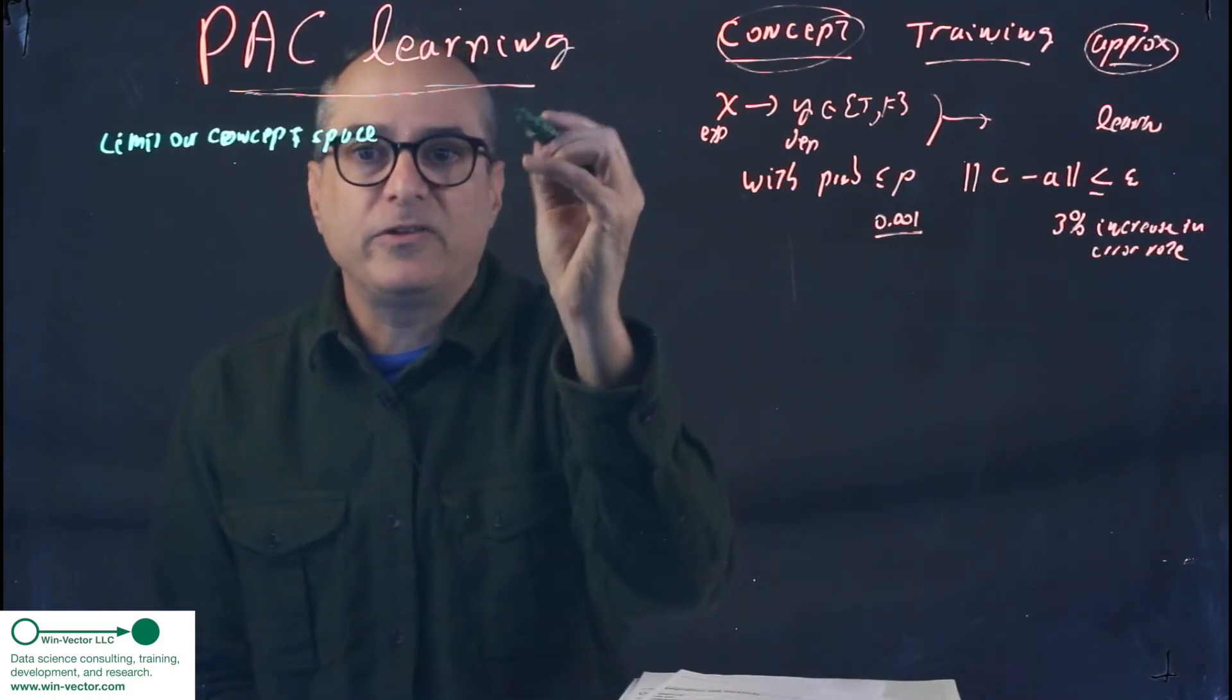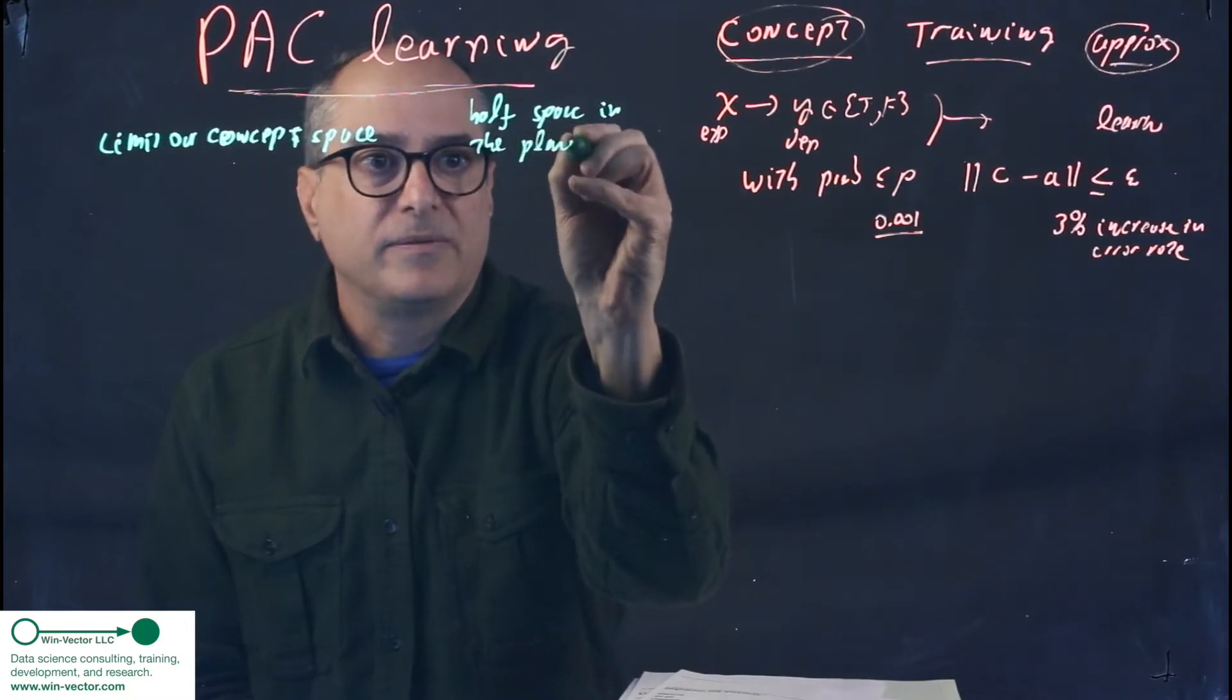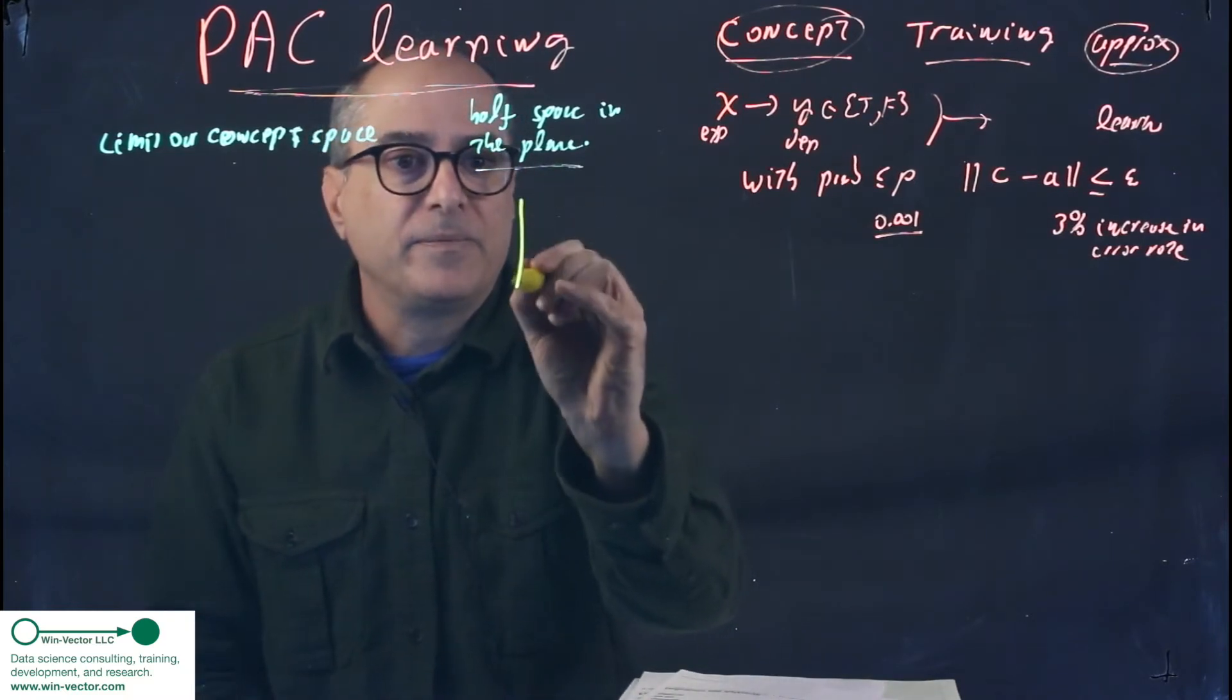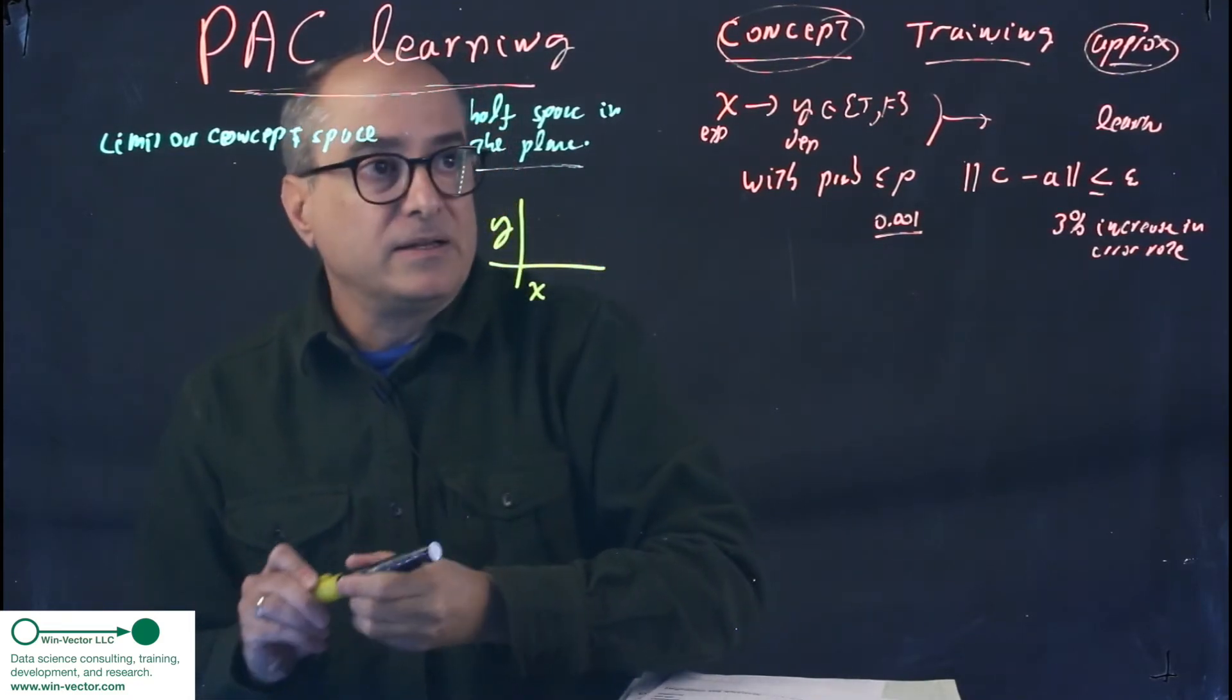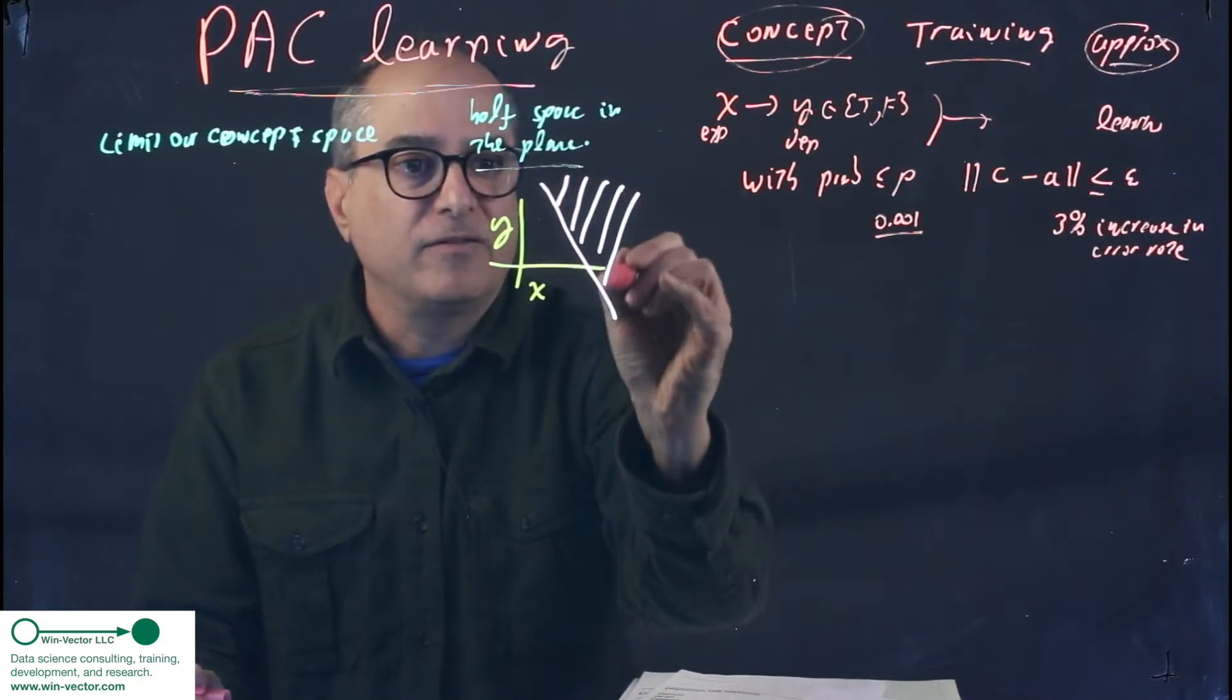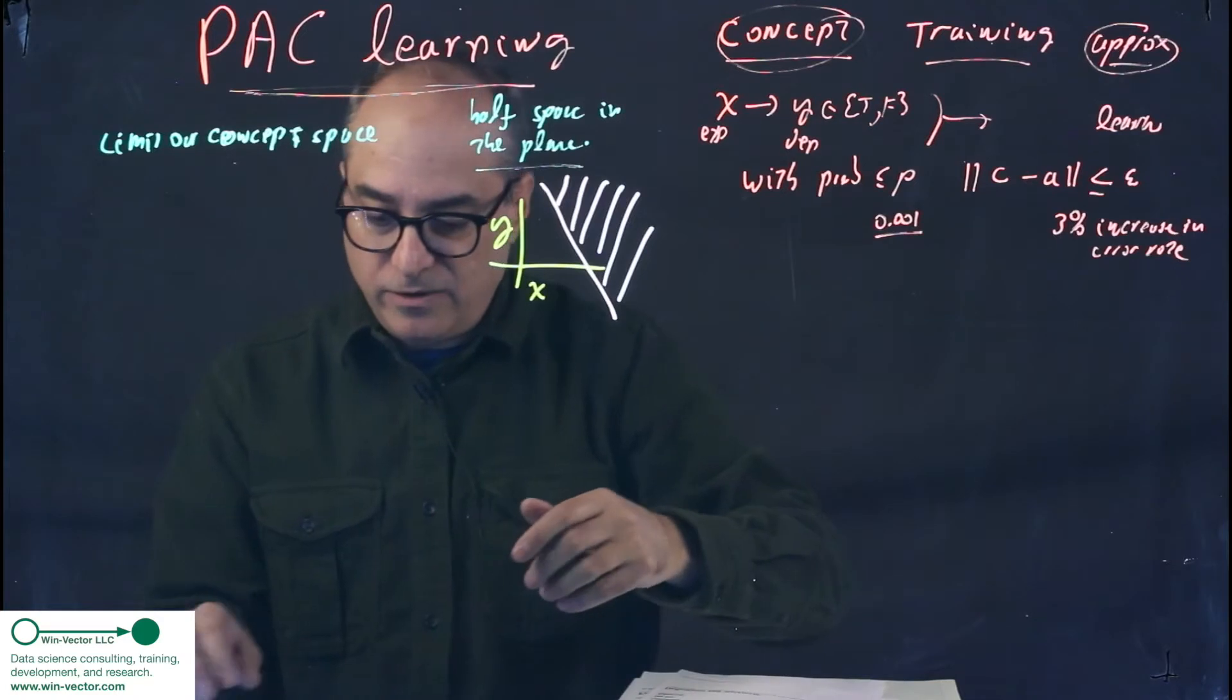So for our example let's make our concept half spaces in the plane. Very limited concept space but interesting all the same. So in a concept we have a plane, this is the x coordinate, this is the y coordinate. And a possible concept is the points we are interested in are all on this side of this straight line. We are limiting only to straight lines we can position them anywhere at any angle.